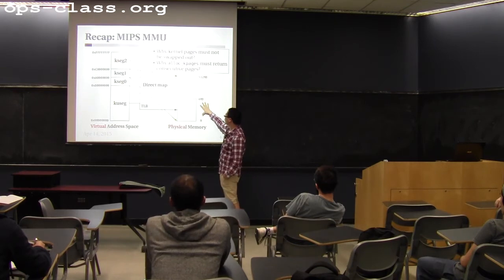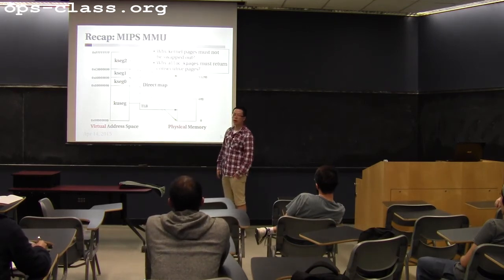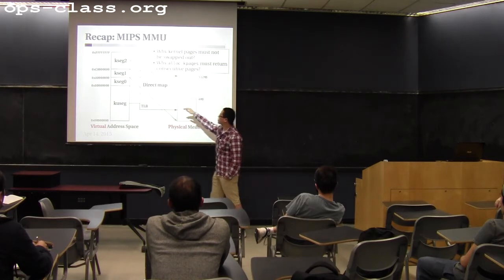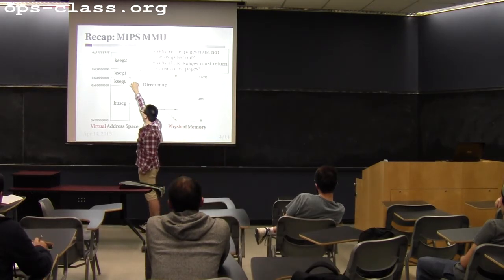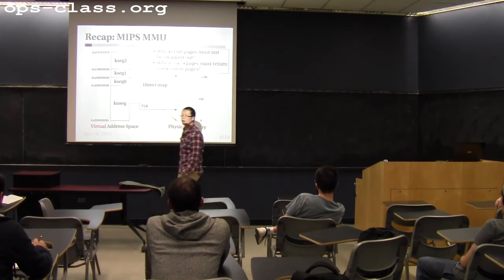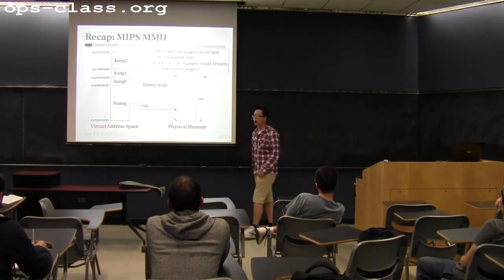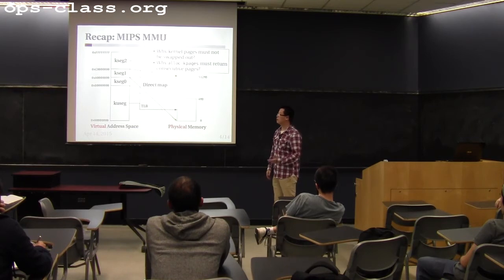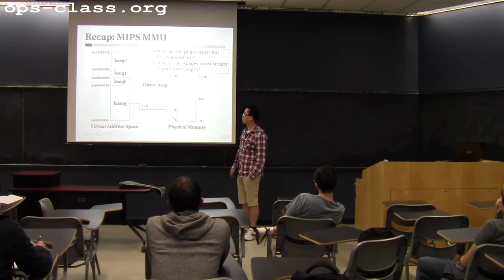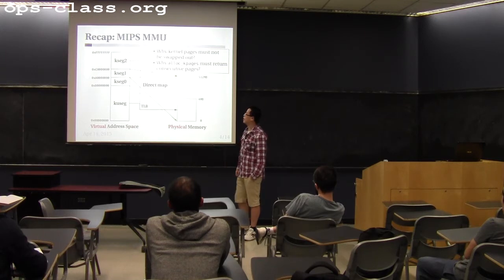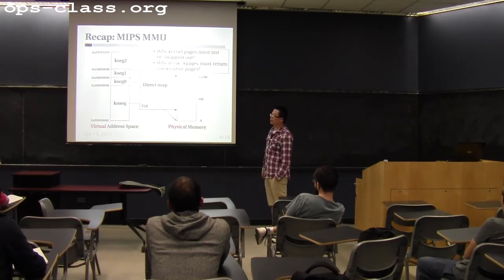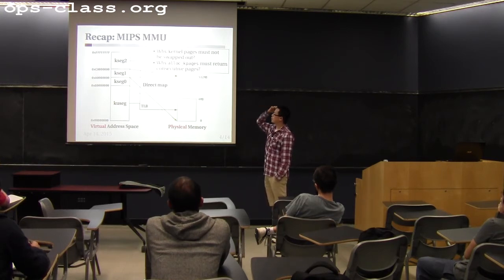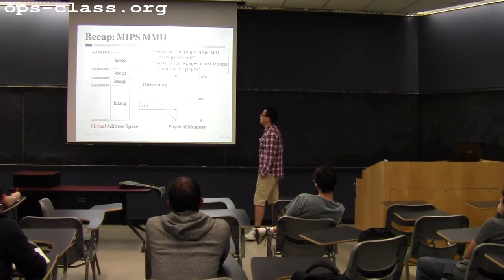Some virtual addresses in kseg0 cannot be mapped to physical addresses. For example, if you only have four megabytes of physical memory and you access a virtual address above that, the hardware can't handle it and you'll get a bus error. Similarly for kernel segment one, the hardware uses a different caching policy, but you don't need to care about kseg1 in this assignment. Kernel segment two is also not used in this assignment.